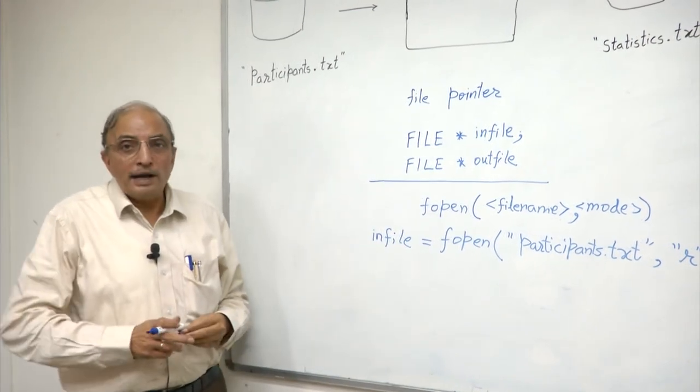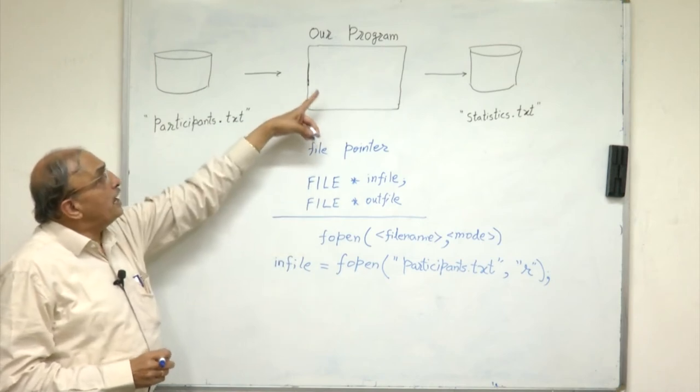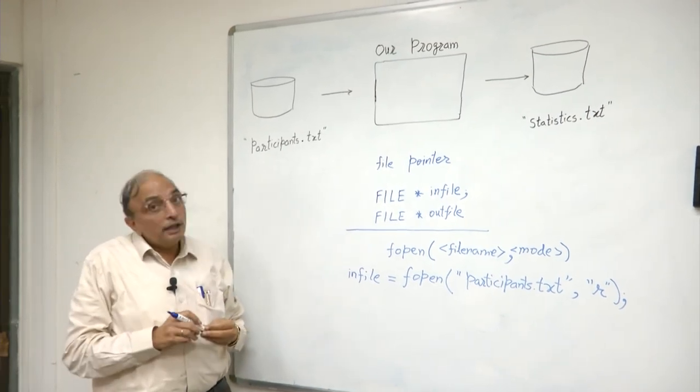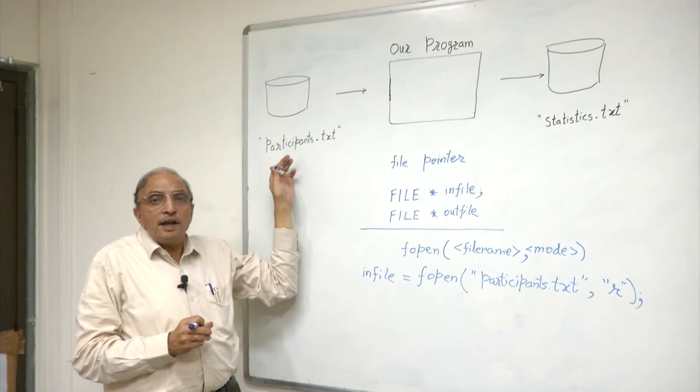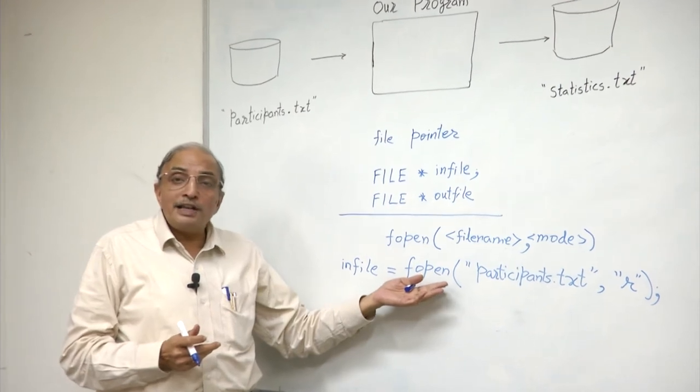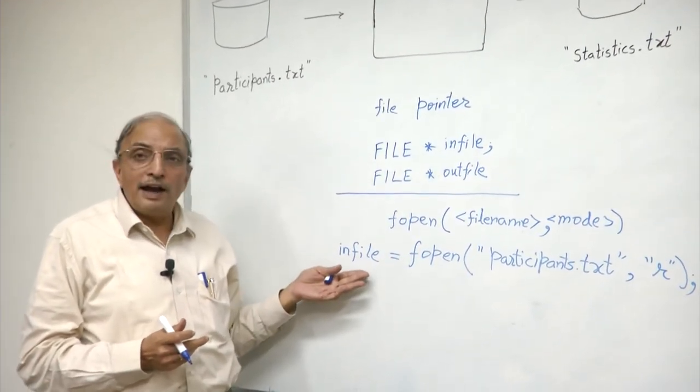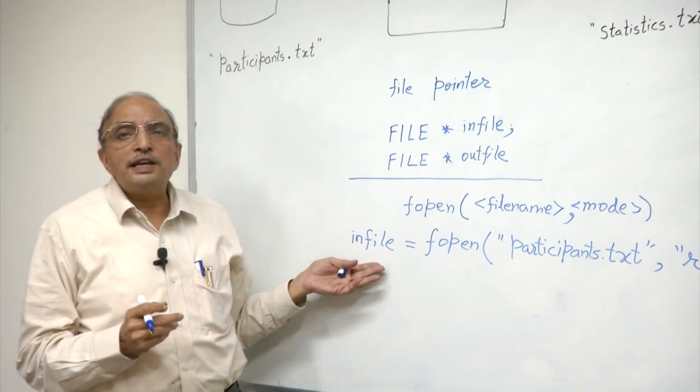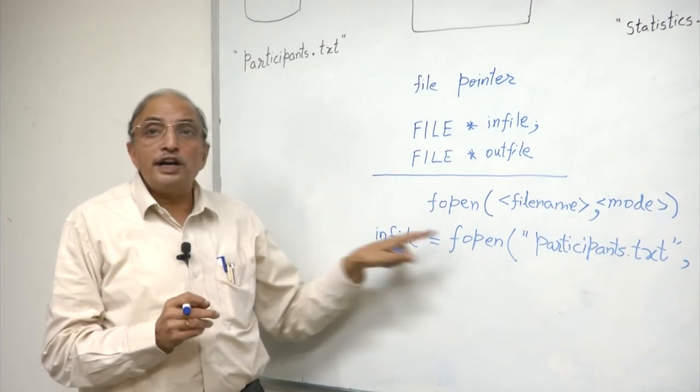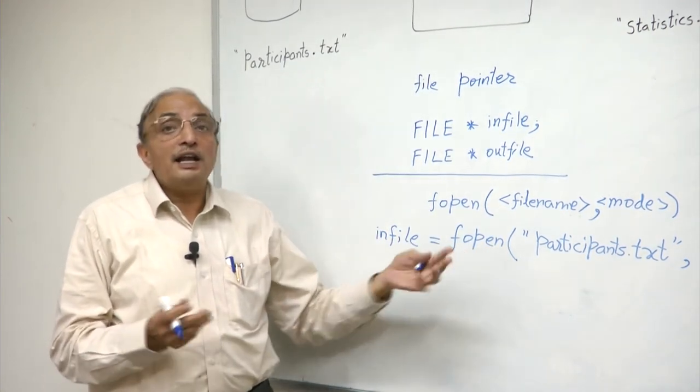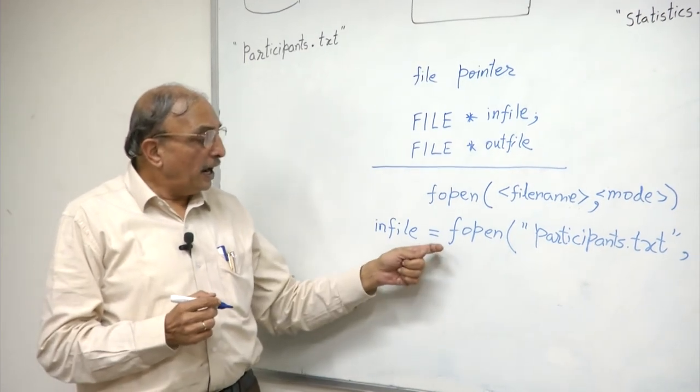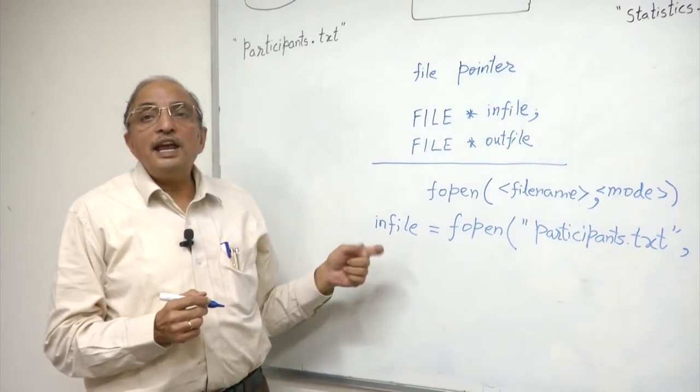There are two possibilities: one, of course, the program with the help of the operating system is able to locate this file and open it for reading operations. But there is a possibility that the file does not exist, maybe we have misspelled the name. The simple answer by C++ is: in case the file can be correctly opened, a valid pointer is associated to infile. In case fopen is unable to locate the file or for some reason not able to open it for your operations, it will return a null pointer.